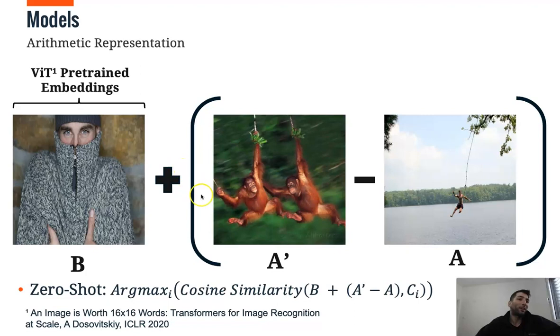And we took several computer vision models for the pretrained embeddings. And then to find the candidate, we just iterate each candidate and measure the similarity, cosine similarity, to this arithmetic representation and select the top one.